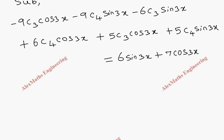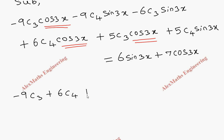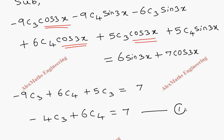Now we collect like terms. For cos3x: the coefficients are −9C3, +6C4, and +5C3. Adding the C3 terms: −9C3 + 5C3 = −4C3. So the coefficient of cos3x gives −4C3 + 6C4 = 7. This is our first equation.